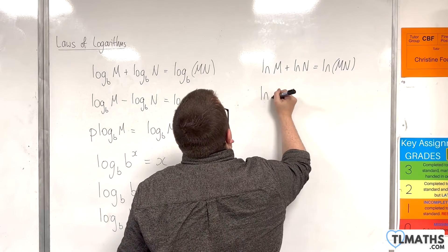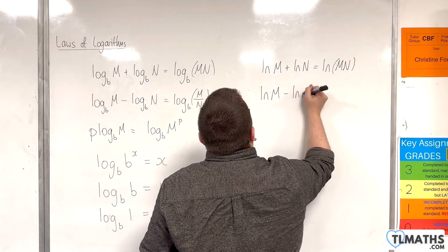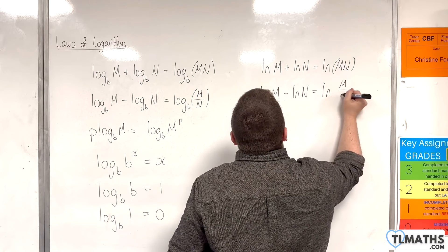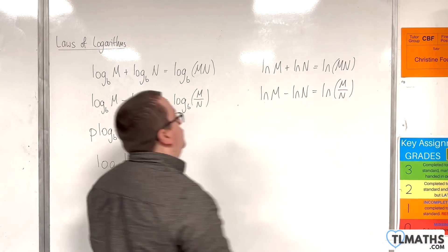Then we have the natural log of m take away the natural log of n is the natural log of m over n. So that's our quotient rule.